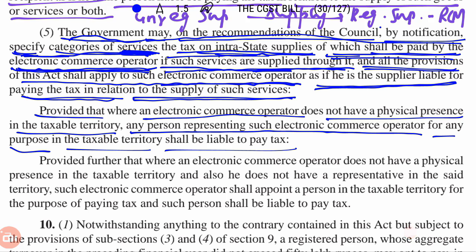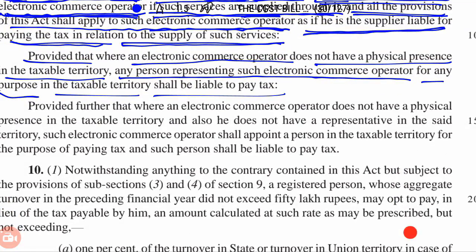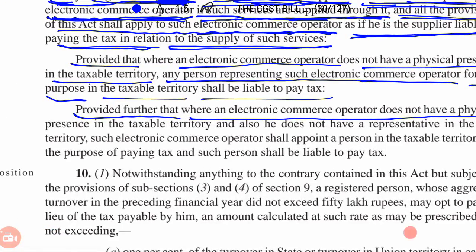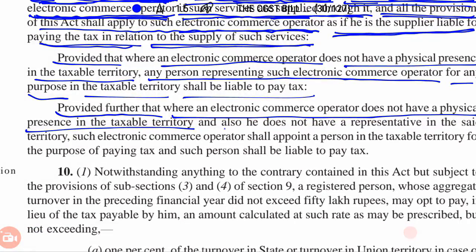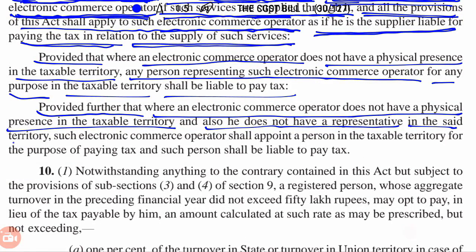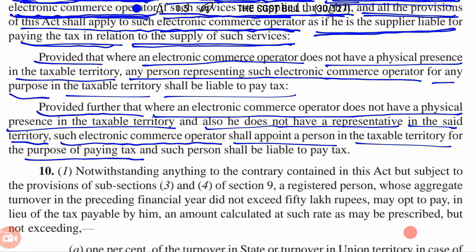Now, if there is an ECO that does not have a physical presence in the taxable territory, and also does not have a representative in the taxable territory, such Electronic Commerce Operator shall appoint a person in the taxable territory for the purpose of paying tax, and such person shall be liable to pay the tax. So in that case, if you are a representative with a physical presence in the taxable territory, such person appointed will be able to pay the tax.